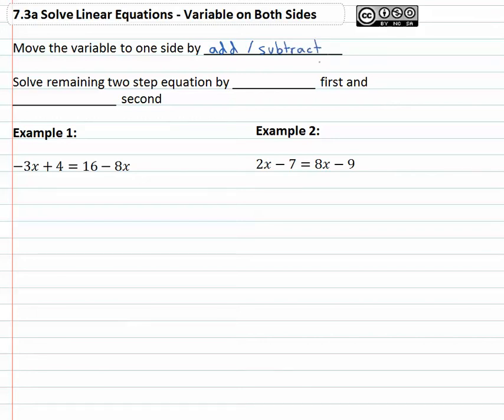You should recall from solving equations in the past that we move things by doing opposites. And so we can solve the remaining two-step equation, doing order of operations backwards by adding or subtracting first, and then multiply and divide second, getting the constants away from the variable.